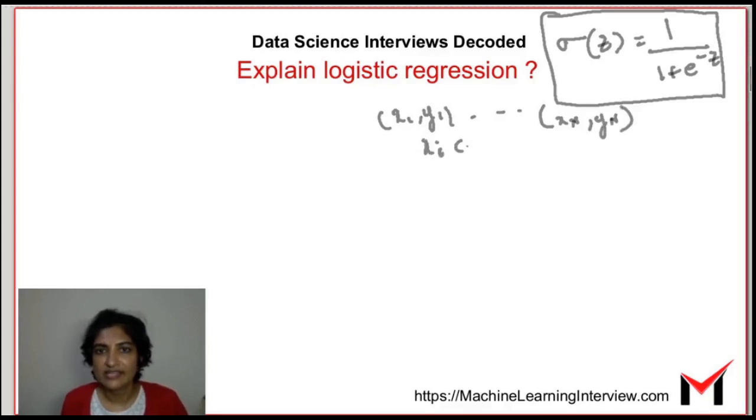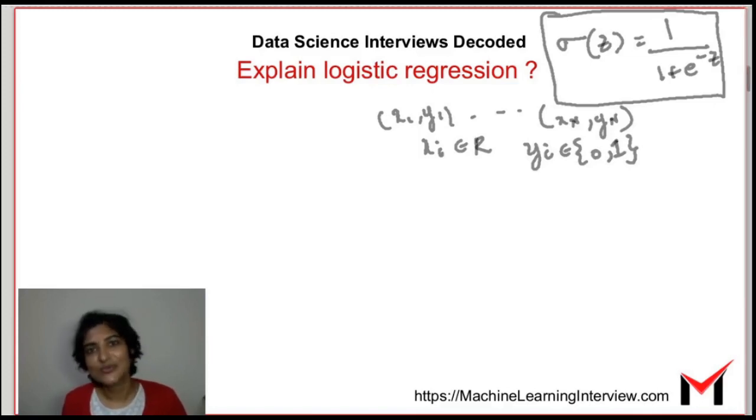The xi's can be anything here but the yi's should belong to 0 or 1 in the case of binary classification because we have only two classes.